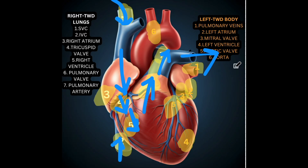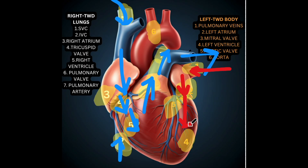Oxygenated blood will come from the lungs into the pulmonary veins, into the left atrium, through the mitral valve, into the left ventricle. It will then be pumped through the aortic valve, up into the aorta, where it will be pumped throughout the body.